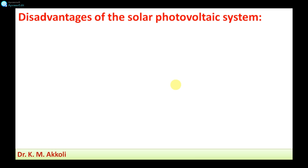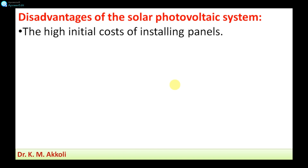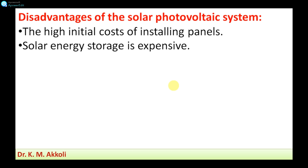Apart from those advantages, some disadvantages of solar photovoltaic systems exist. The first is the high initial cost of installing panels — the installation includes panel cost, the converter or inverter, and the transmission cost, which is more. Initially, if you install the system, the cost will be high, though later maintenance costs are less.